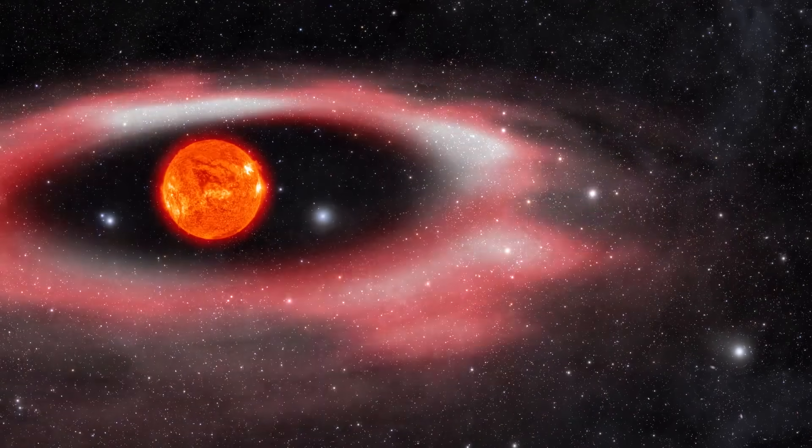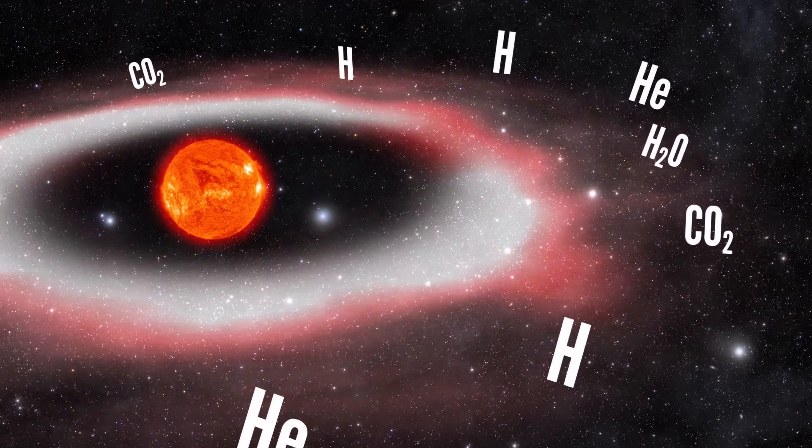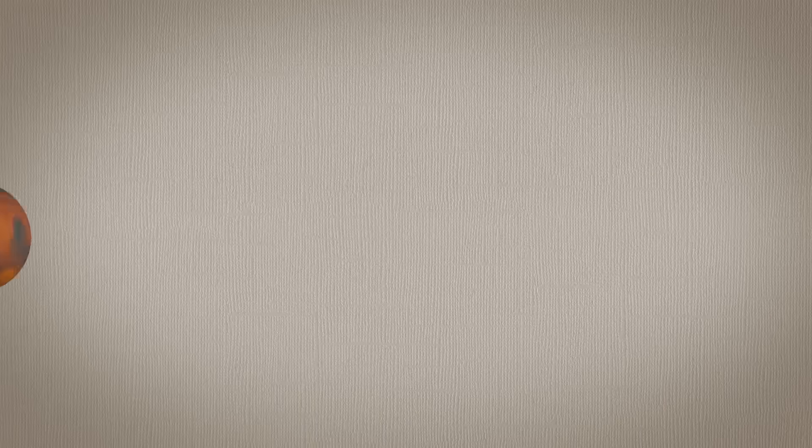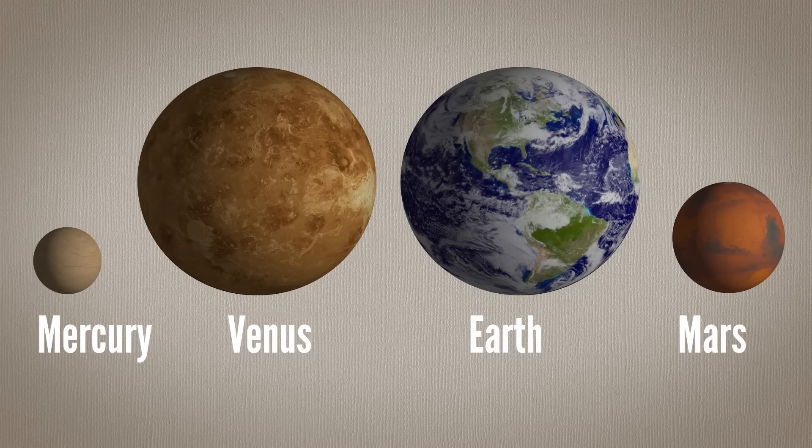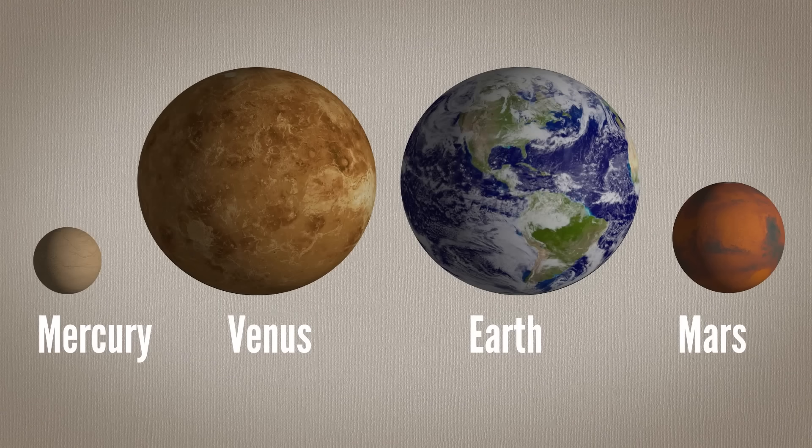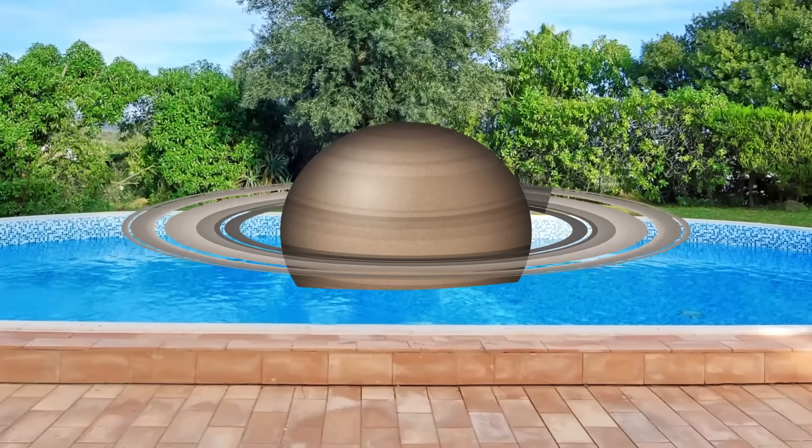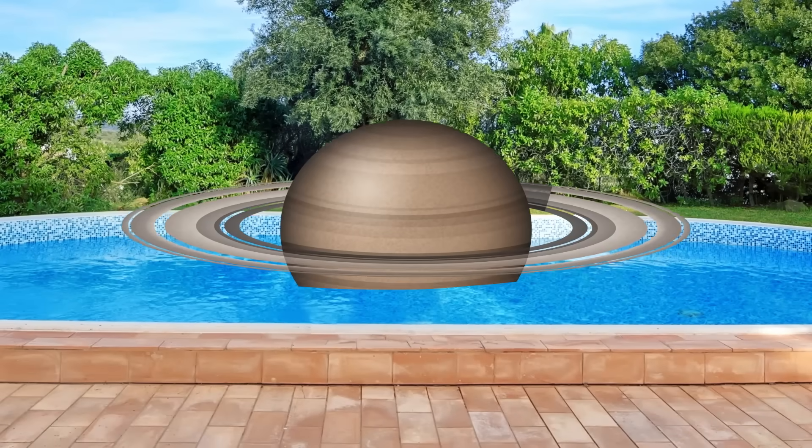High temperatures in the early inner solar system meant that light, volatile elements could only condense further out. Which is why the four inner planets of our solar system are dense and rocky, while outer gas giants like Saturn could hypothetically float in a really, really, really big swimming pool.